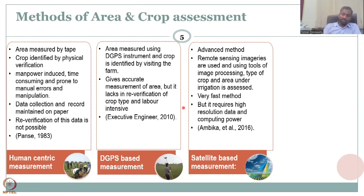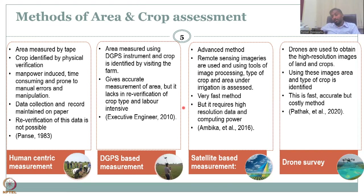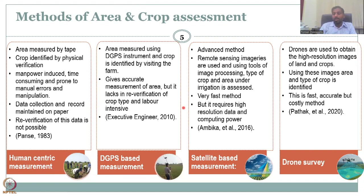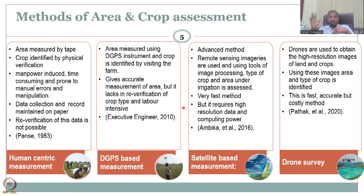With platforms like Google Earth Engine, you simply select the area, click the button, and it runs on Google's supercomputer for your analysis. Drones are the last method — the most expensive type of remote sensing. They take high-resolution images of land and crops, and crop type and acreage can be identified accurately. However, the price is very high and a person must go to the field to fly the drone, unlike satellite data which can be processed remotely. Drones are very accurate but consume a lot of time, money, and capacity.